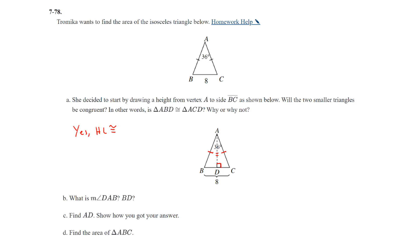Part B: what is the measure of angle DAB and what is BD? The top angle is 36 degrees and the height splits it into two equal parts, so angle DAB equals 18 degrees. The base BC was 8, and cutting it in half means BD equals 4 units.